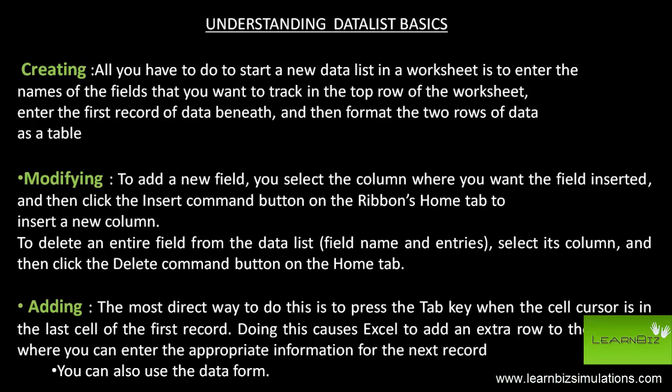All you have to do to start a new data list in a worksheet is to enter the names of the fields that you want to track in the top row, enter the first record of data beneath, and format the two rows of data as a table.